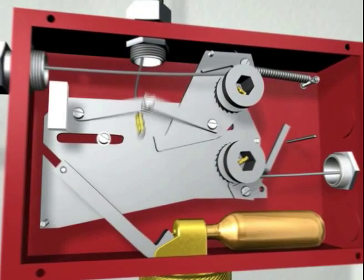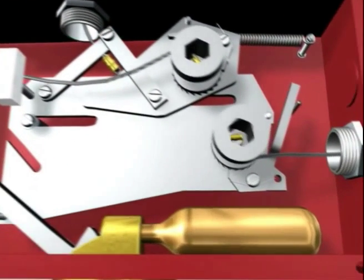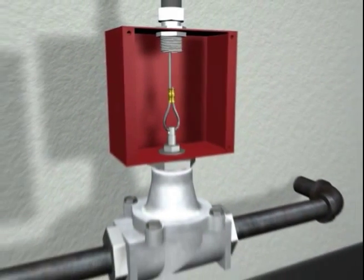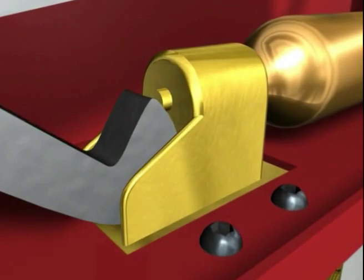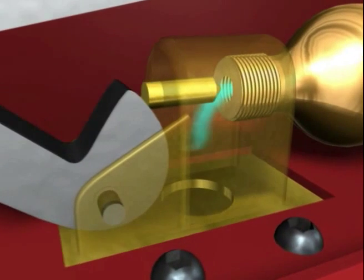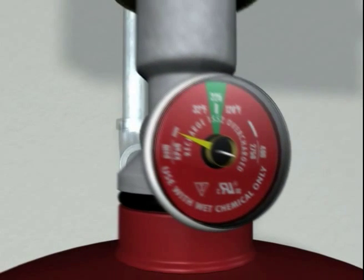The wire triggers the gas valve to shut off. Simultaneously, the system is actuated as a pin punctures the small CO2 cartridge within the mechanical control head. The cartridge pressure opens the agent tank valve, allowing the wet chemical agent to flow freely throughout the piping network.